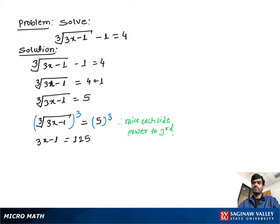We add 1 to both sides — the 1s cancel out, so we get 3x equals 126. Then we divide both sides by 3 — the 3s cancel out — and we get x equals 126 divided by 3, which is 42.